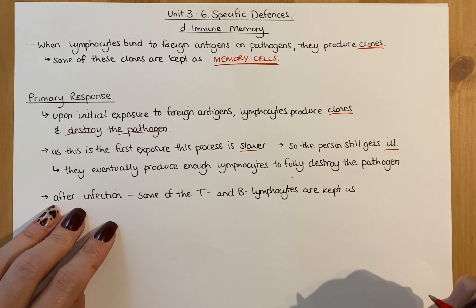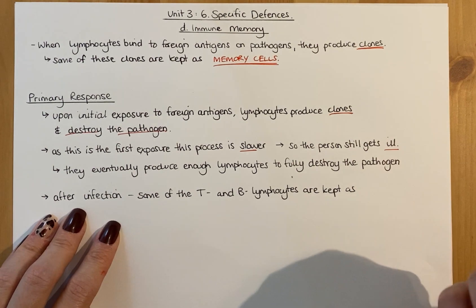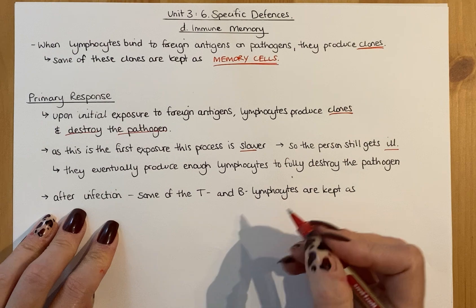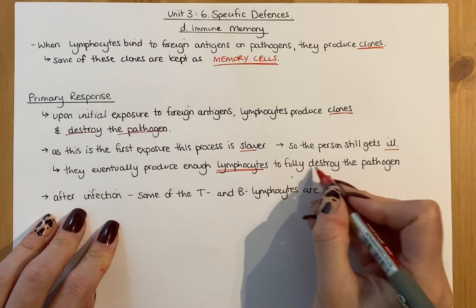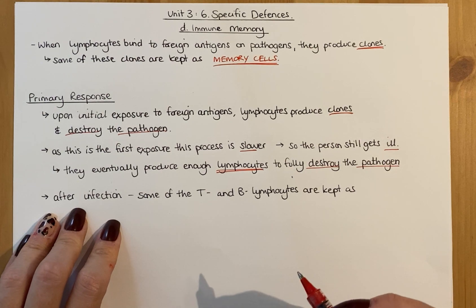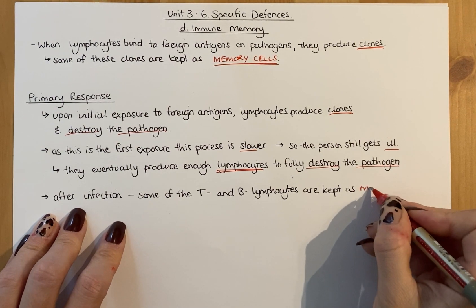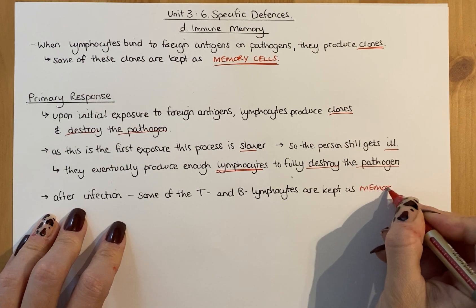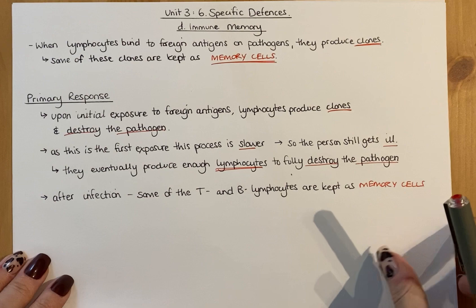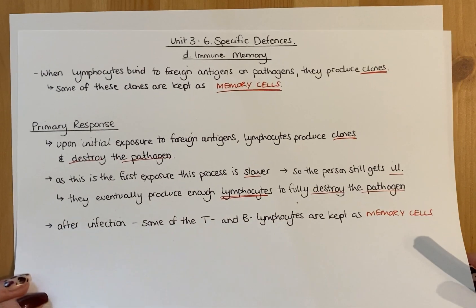Because the first response is slow, the person will still get ill — they'll have the symptoms of that disease. They eventually produce enough lymphocytes to destroy the pathogen and clear it from the body. But then some of those lymphocytes, both B and T, are kept as memory cells. This is important for the next time you may come into contact with that same antigen and pathogen.